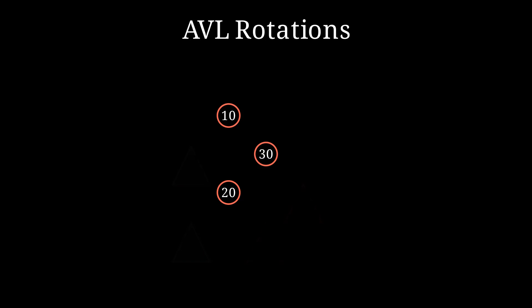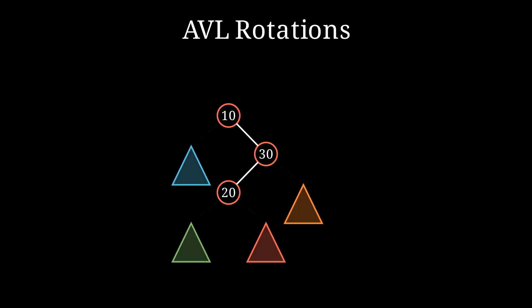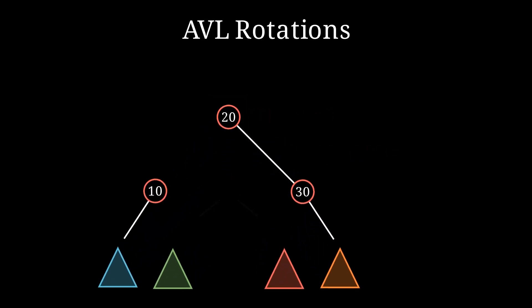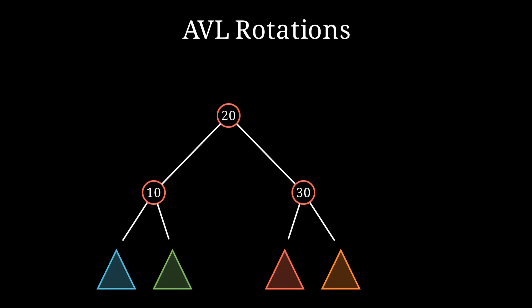The third type of rotation is a right-left rotation. It is used when the tree configuration is as shown. Here, the root has balance factor negative 2, and the balance factor of the right child is 1, which triggers a right-left rotation. We rotate such that node 20 is brought up to be the new root — node 30 becomes its right child, and node 10 becomes its left child. The pointers to the subtrees are updated, and after the rotation the heights and balance factors are all within the acceptable range again.